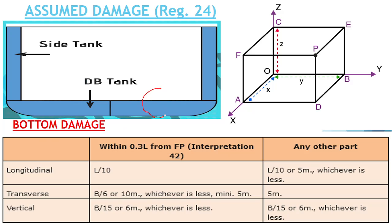For bottom damage, from the fore peak to 0.3L of the ship, there is one regulation, and after that there is another. In the longitudinal direction, the extent is L/10. For the transverse direction, from fore peak to 0.3L it is B/6 or 10 meters whichever is less, with a minimum of 5 meters. The vertical extension is B/15 or 6 meters, whichever is less.